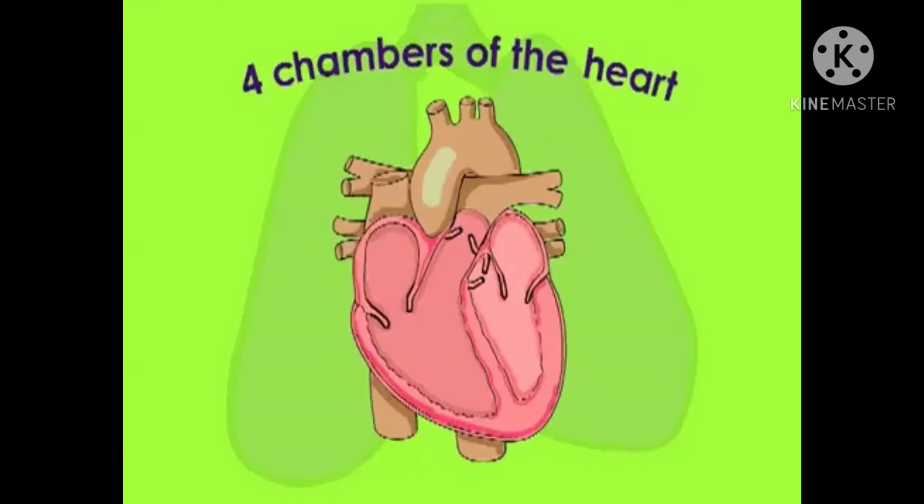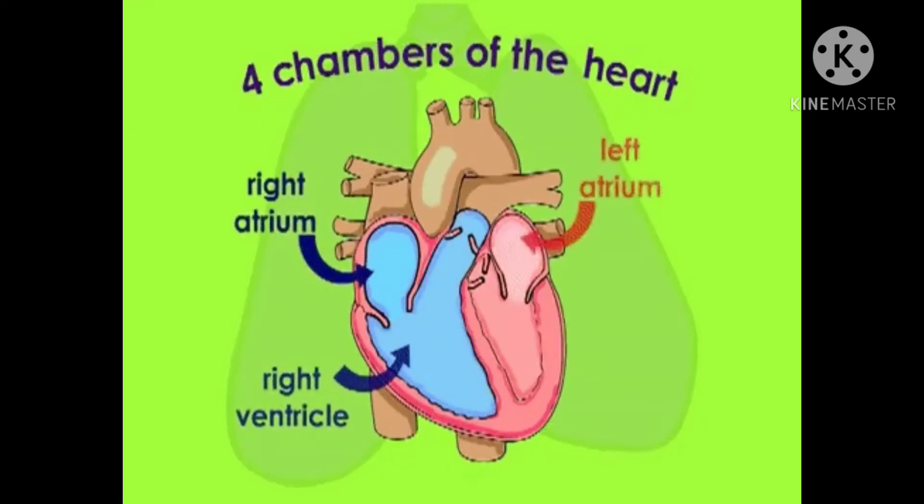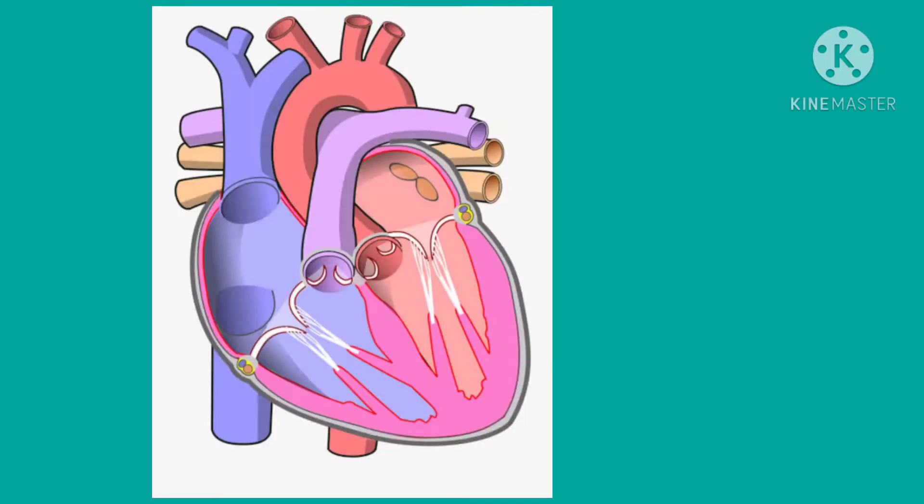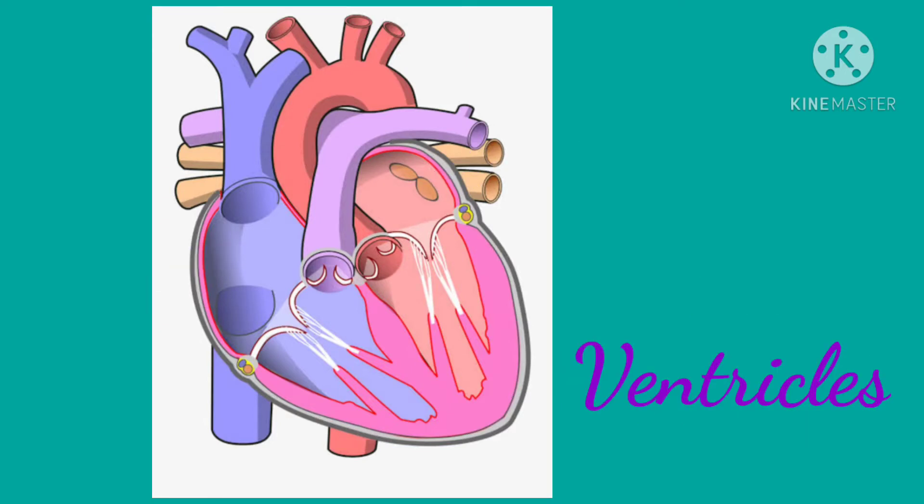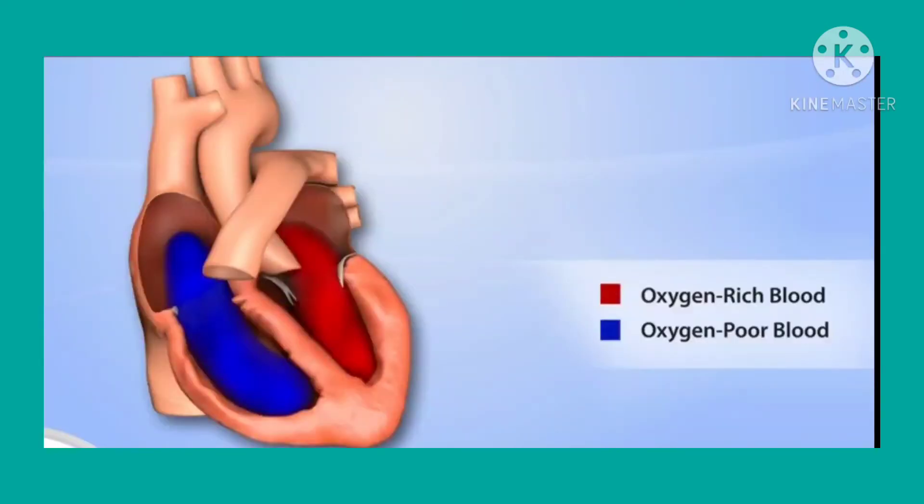The heart has four compartments called chambers. The upper two chambers of the heart are called atria or auricles, and the lower two chambers are called ventricles.